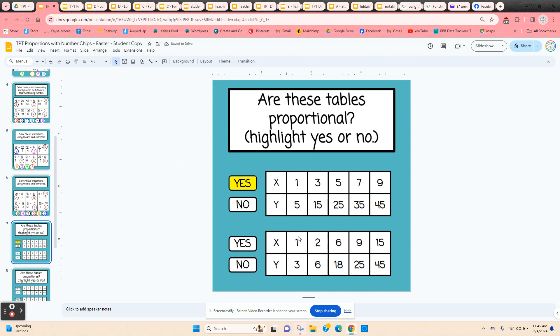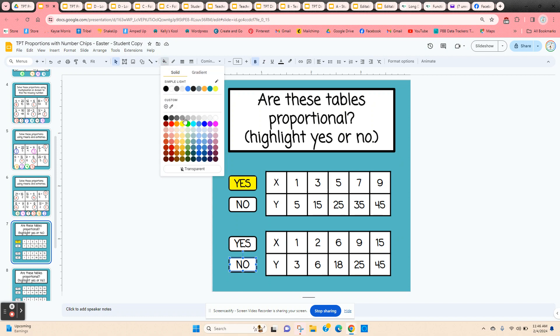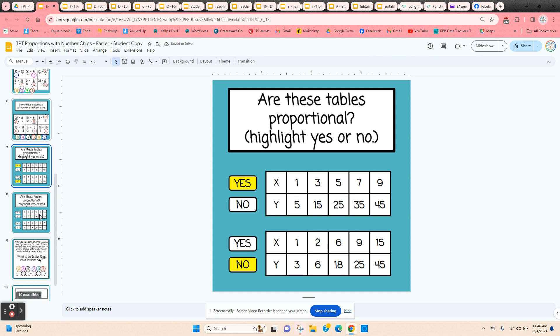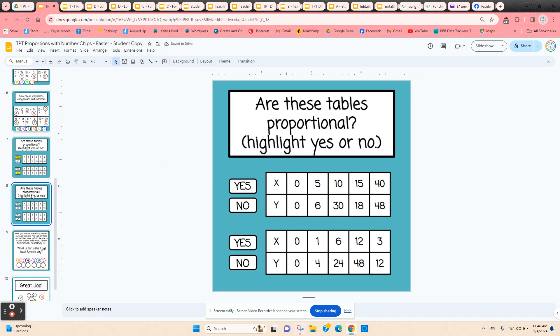This next table, you can see that they're going to multiply their x times three. You want to check and see if that works on every single ratio, and it doesn't work here. That means it's not a proportional table. Every one of the ratios need to be equivalent. They've got another slide where they're going to do the same thing, two more tables.